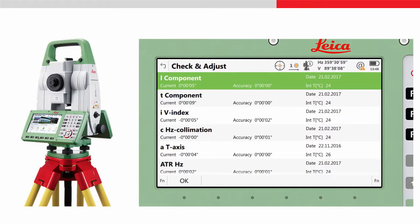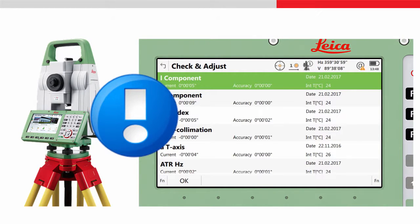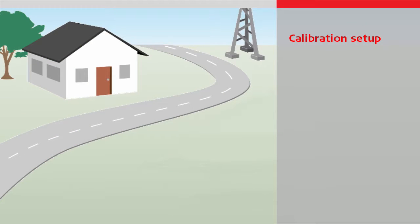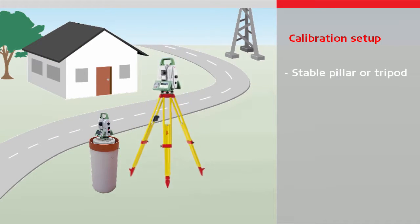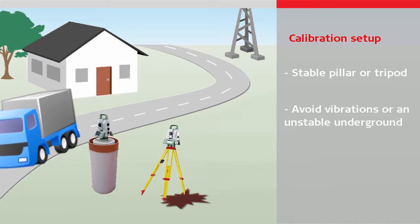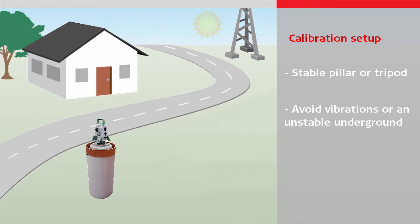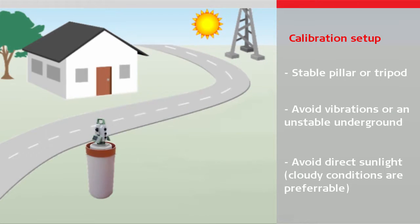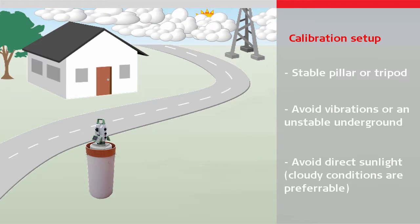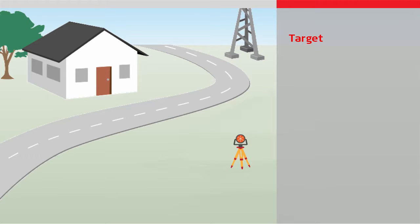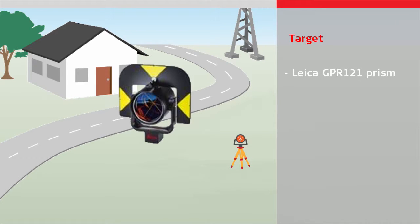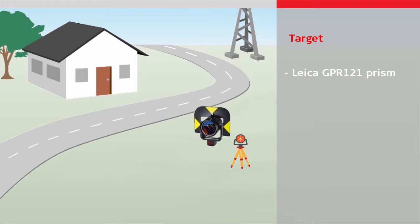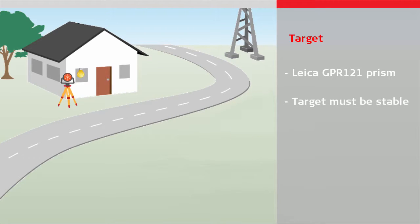To avoid systematic errors, the following aspects must be considered to guarantee reliable results. Set up the instrument on a stable pillar or tripod, as an unstable or vibrating environment will affect the results. The instrument should be protected from direct sunlight to avoid thermal warming. Environments with strong heat shimmer or air turbulence should be avoided; therefore it is recommended to calibrate the instrument under cloudy conditions. For the target, we recommend using a Leica Circular Prism GPR121 in a location which is protected from direct sunlight. Vibrations of the target, as well as reflective surfaces or light sources around the prism, should be avoided.